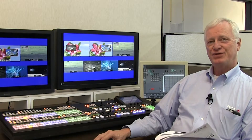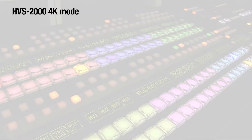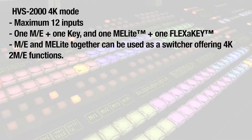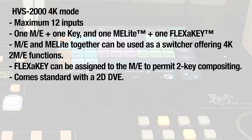The HVS2000 has a 4K option that allows input of either 2SI or SQD signals. In 4K mode, the unit has a maximum of 12 inputs, one ME plus one key, and one ME light plus one flexi-key. The ME and ME light together provide 4K 2ME functions. The flexi-key can be assigned to the ME to permit two-key compositing with both keys supporting full-size 4K compositing. It comes standard with a 2D DVE.